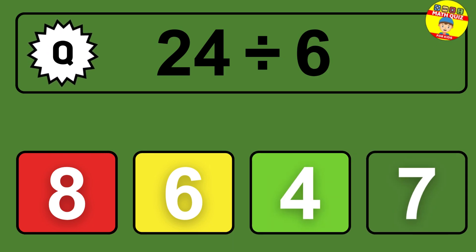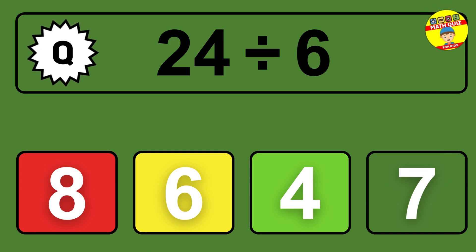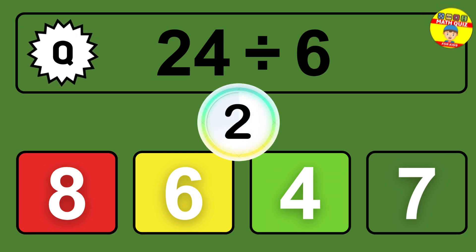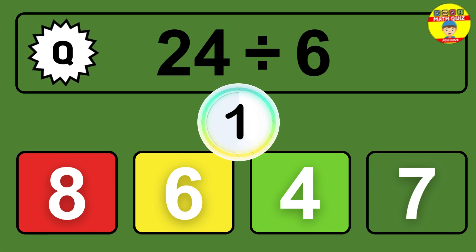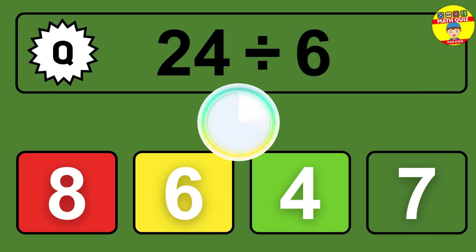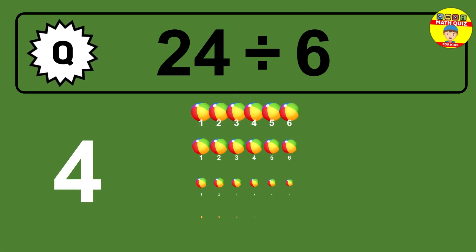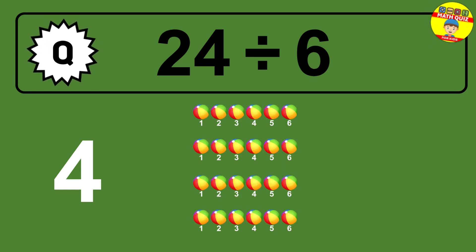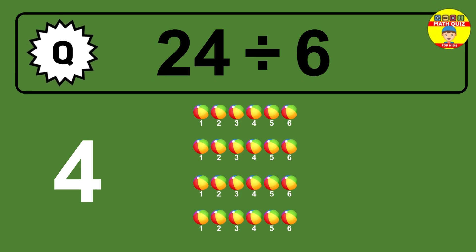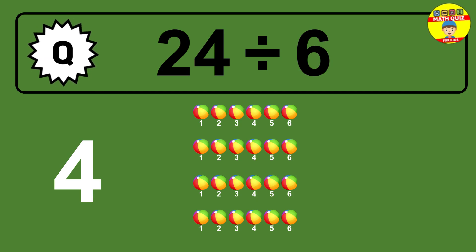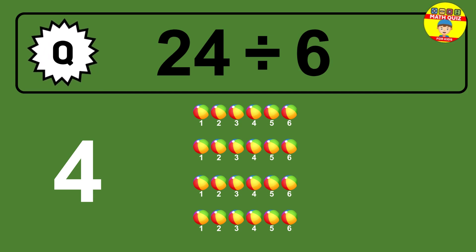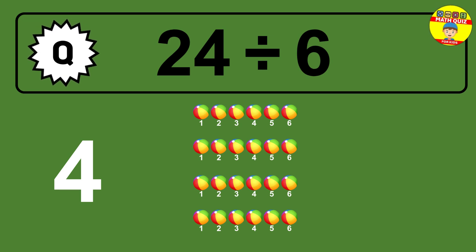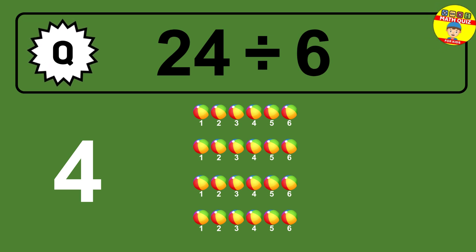24 divided by 6 — time to think. Let's go to the solution. Divide the number 24 by 6. Each group contains 6 units, so dividing 24 by 6 results in 4 equal groups. Thus, the result is 24 divided by 6 equals 4.